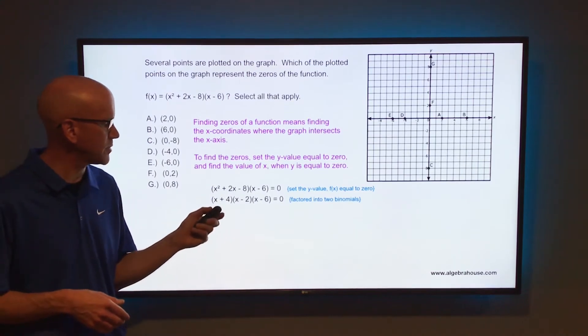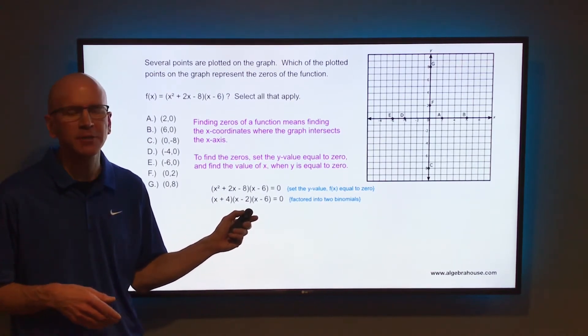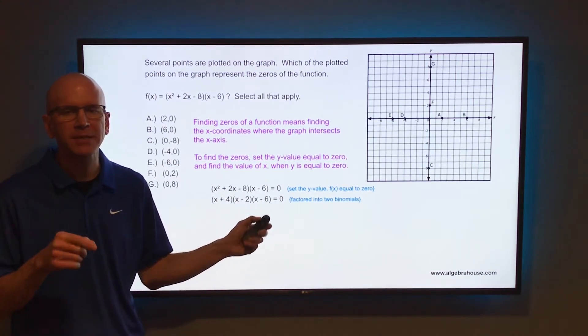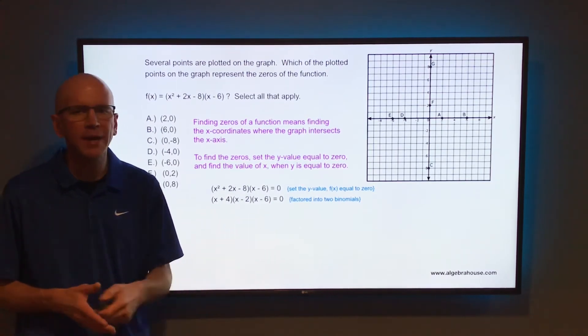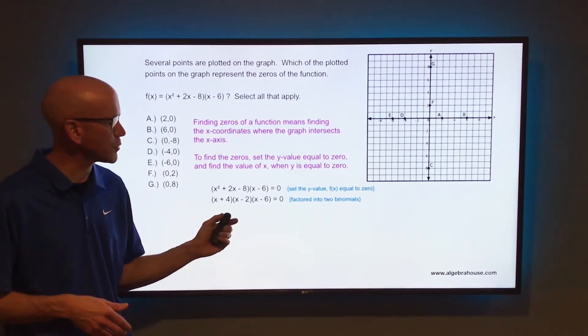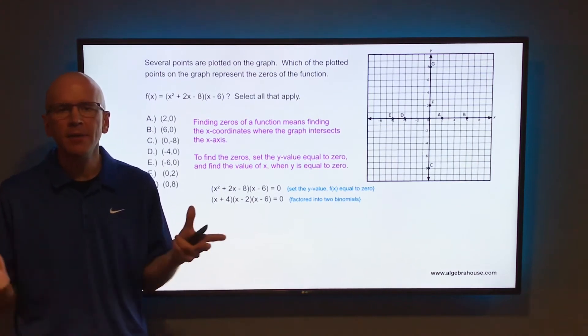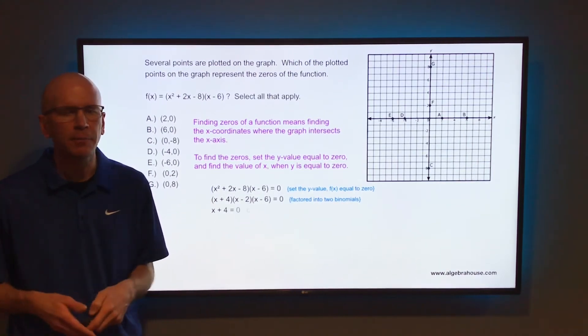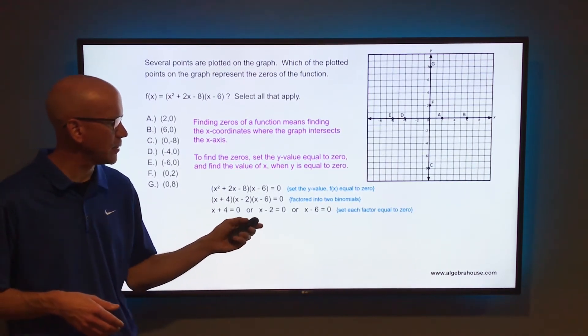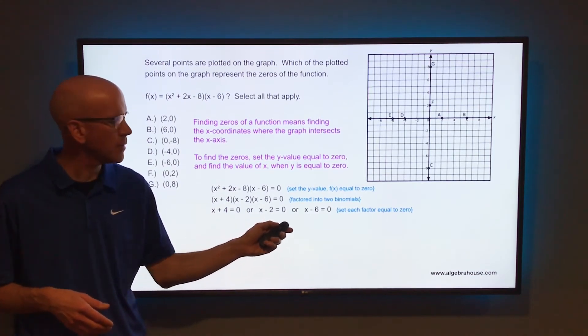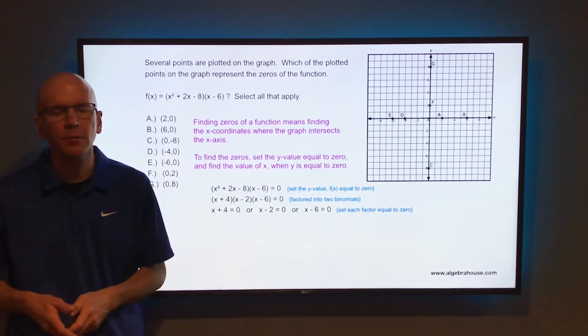So that factors into (x + 4)(x - 2), and don't forget you have (x - 6) on the end. Those three multiply together to equal zero. So if those three multiply together to equal zero, then any of those three could be equal to zero. So x + 4 could be equal to zero, x - 2 could be equal to zero, or x - 6 could be equal to zero.